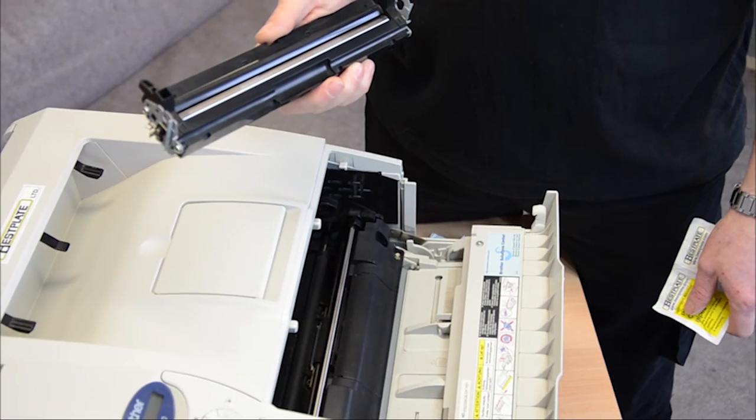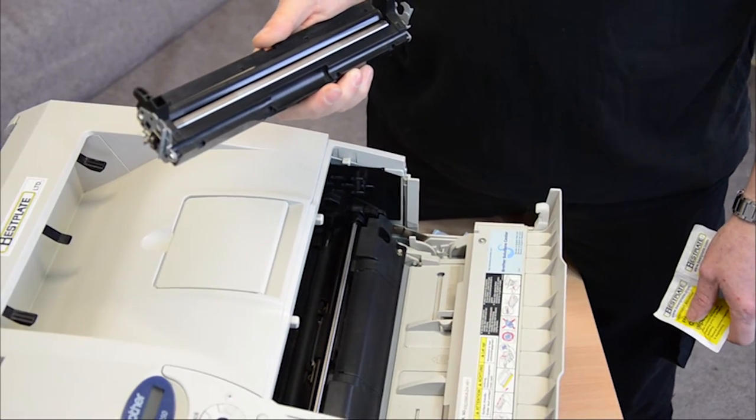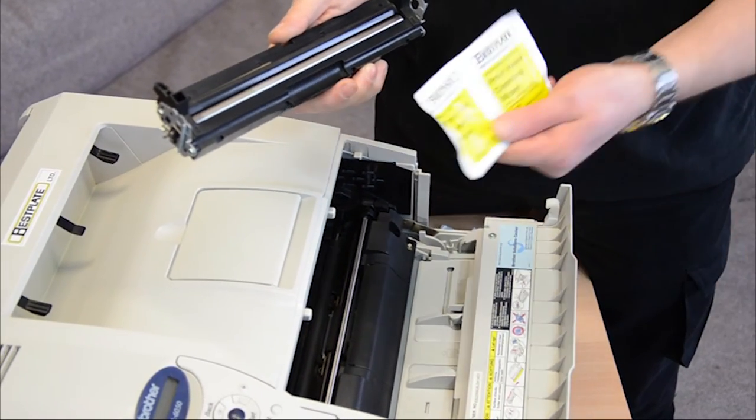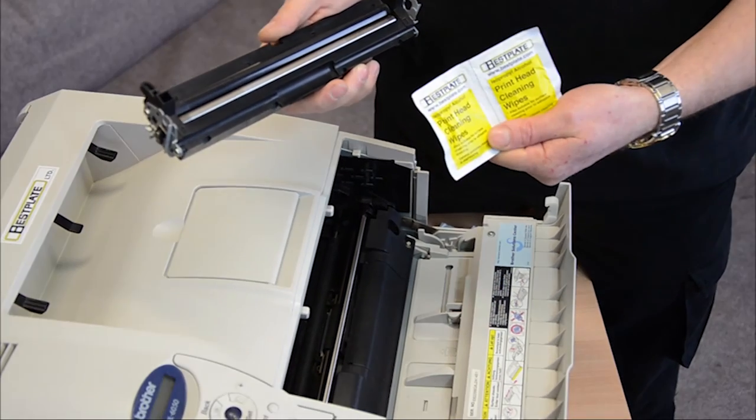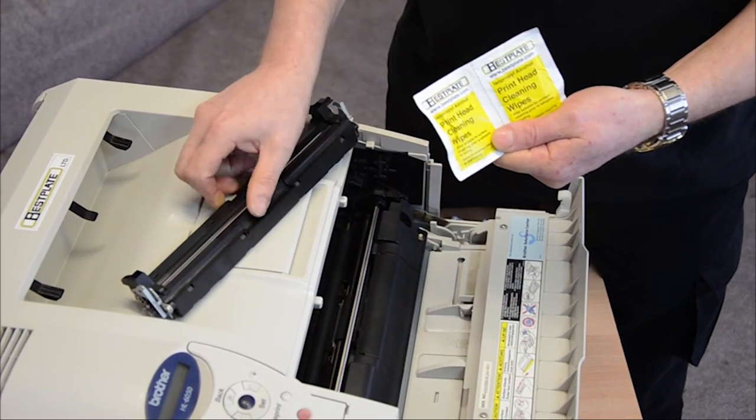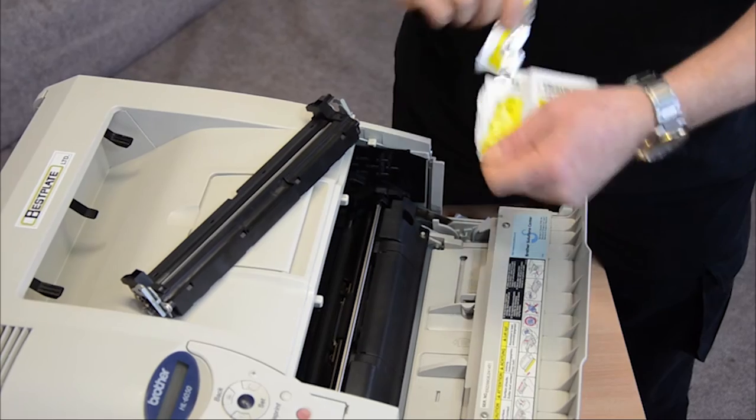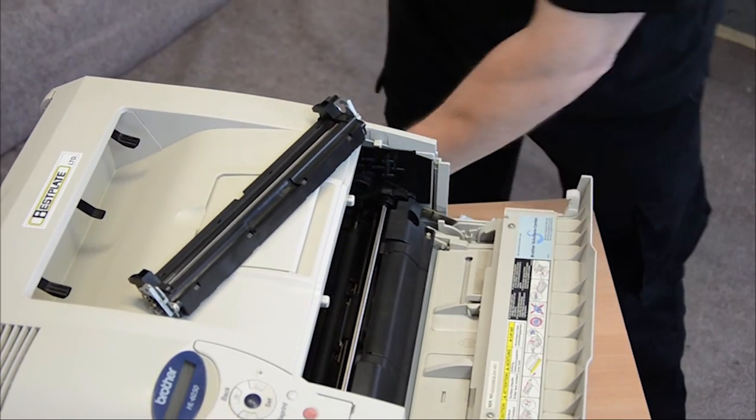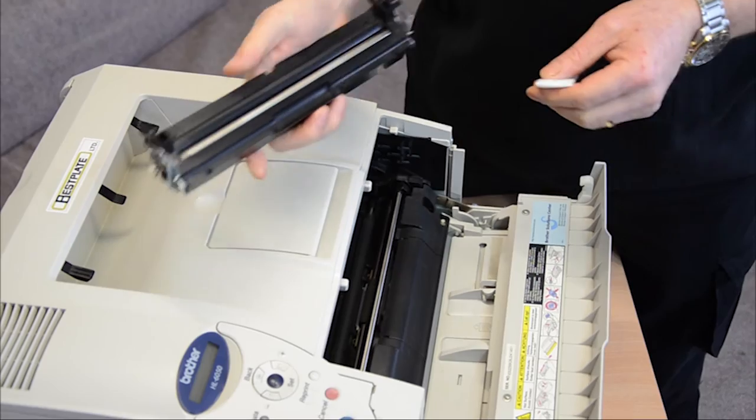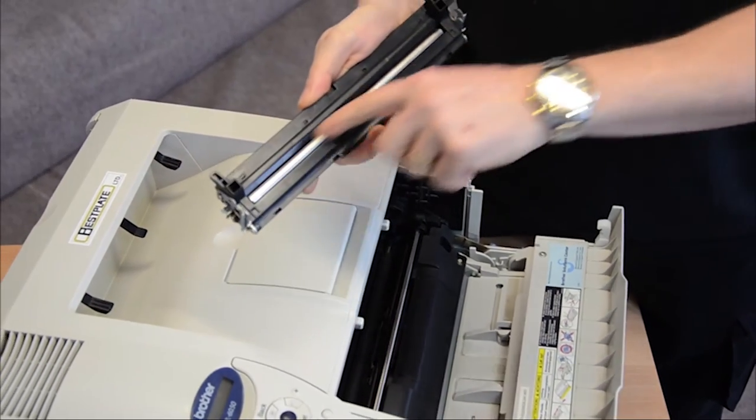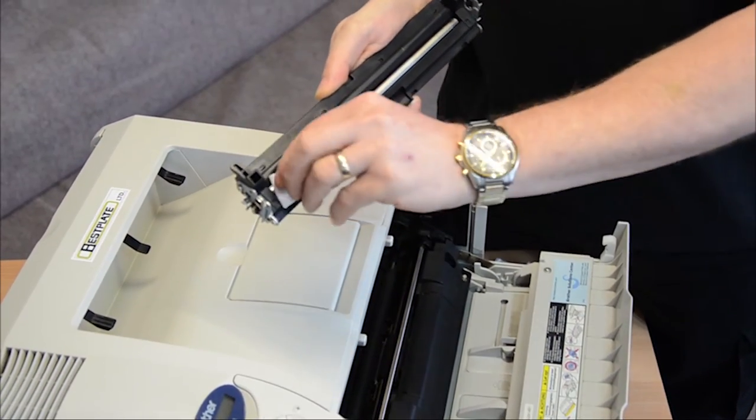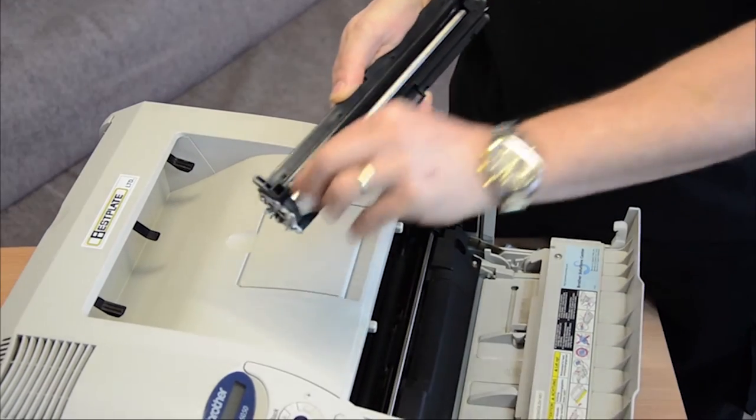Now we've taken the FCU out of the printer, we need to clean it. For that, we need to use some alcohol wipes which you can get from bestplate.com. First of all, take your alcohol wipe. The area on the FCU that needs to be cleaned is the silver bar. Wipe that with the alcohol wipe.